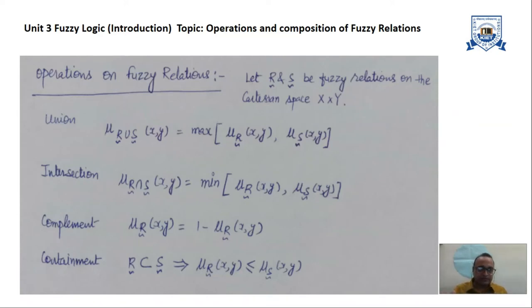That fuzzy relationship can be achieved with the help of the Cartesian product of the two fuzzy sets, which we have already seen in the last lecture.